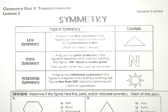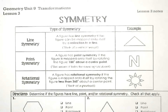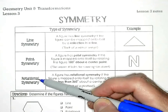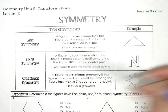In this unit I want to talk about symmetry. Symmetry is not necessarily one of the transformations, but we do use some of our transformations to help us find symmetry. We're just going to identify between these three different types of symmetry: line, point, and rotational.